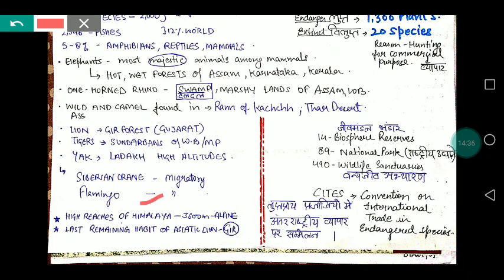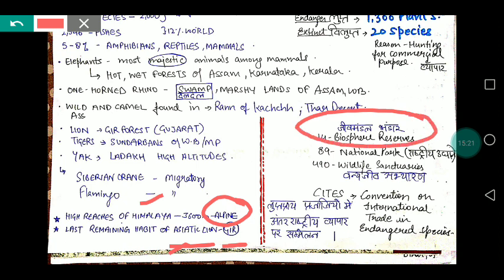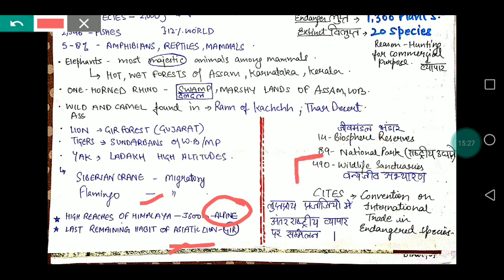At high reaches of the Himalayas, above 3,600 meters, you find high-altitude animals. The Gir Forest is the last remaining habitat of the Asiatic lion. India has 18 biosphere reserves.